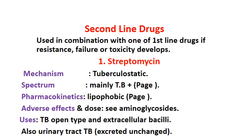The second-line anti-tuberculous drugs are used in combination with one of the first-line drugs under three conditions: resistance — if there is no improvement, the patient is considered resistant and the drug is changed to a second-line one; failure; or toxicity — which is why we observe for specific drug toxicity by each drug, because the occurrence of toxic effects necessitates changing to other drugs.